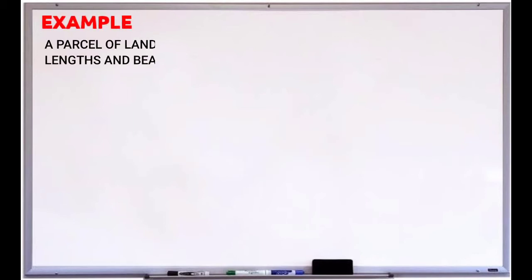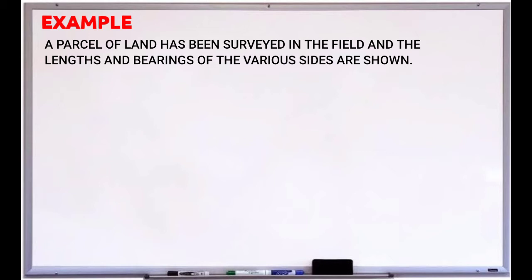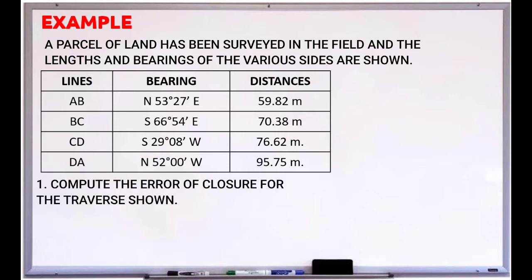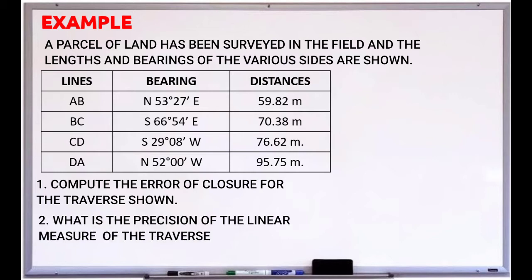Let's proceed to the example. A parcel of land has been surveyed in the field and the lengths and bearings of the various sides are shown. Line AB has a bearing of N53°27'E with a distance of 59.82 meters. Line BC has a bearing of S66°54'E with a distance of 70.38 meters. Line CD has a bearing of S29°8'W with a distance of 76.62 meters. Line DA has a bearing of N52°W with a distance of 95.75 meters. Question 1: compute the error of closure. Question 2: what is the precision of the linear measurement?